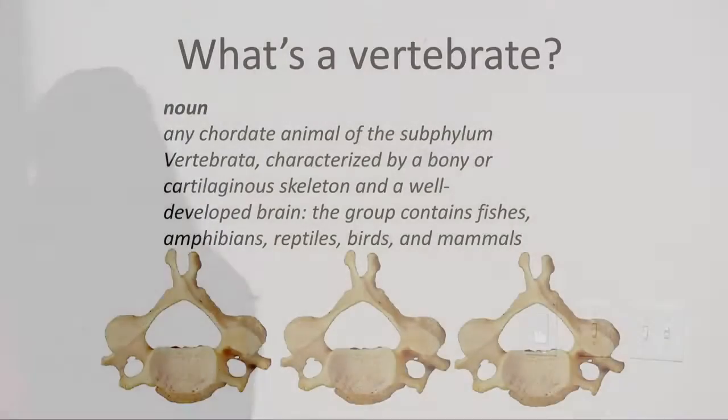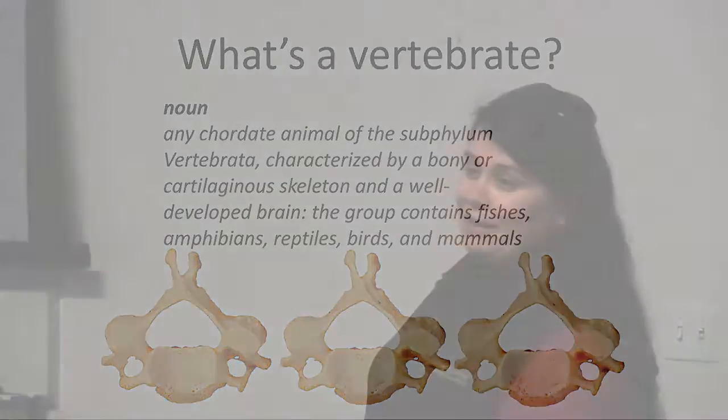What's a vertebrate? Basically any chordate animal — the sub-phylum vertebrata — characterized by a bone or cartilage skeleton and a well-developed brain. Most of us definitely have the spine; some of us definitely don't have the brains. That includes fish, amphibians, things that live in water and on land — things with fur, feathers, and scales.